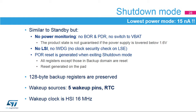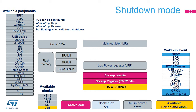The 128-byte backup registers are retained in shutdown mode. The wake-up sources are the five wake-up pins and the RTC events, including tampers. When exiting shutdown mode, the wake-up clock is HSI at 16 MHz. In shutdown mode, the main regulator and the low-power regulator are powered down. The RTC, clocked by the external low-speed oscillator, can remain active. The brown-out reset is deactivated. Only the external low-speed clock can be enabled. The wake-up events are the RTC and tamper events, the reset, and the five wake-up pins.